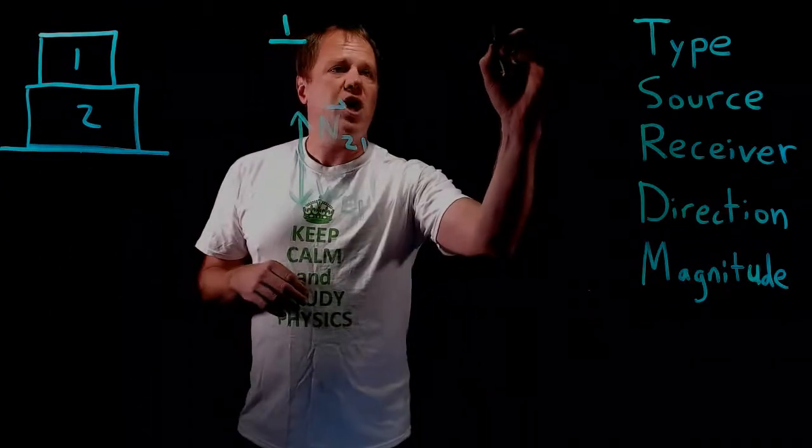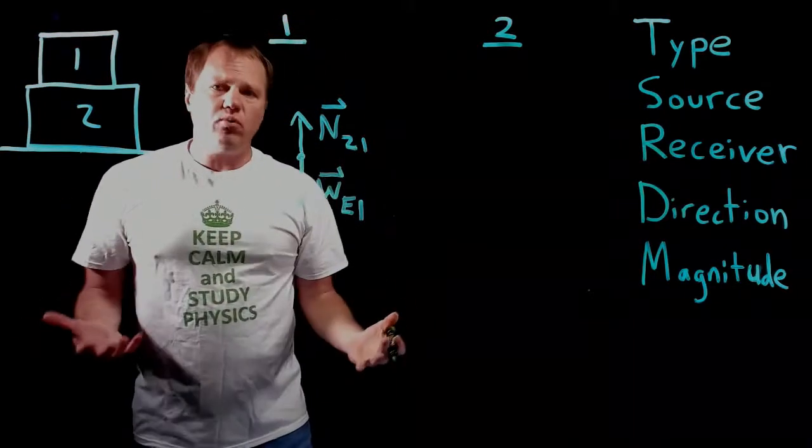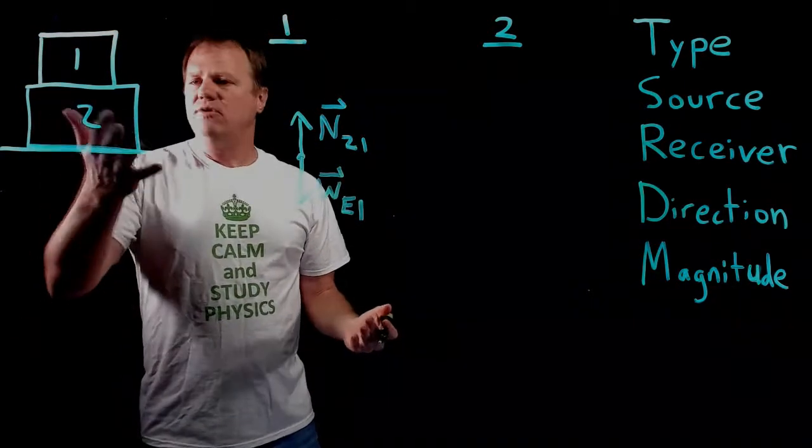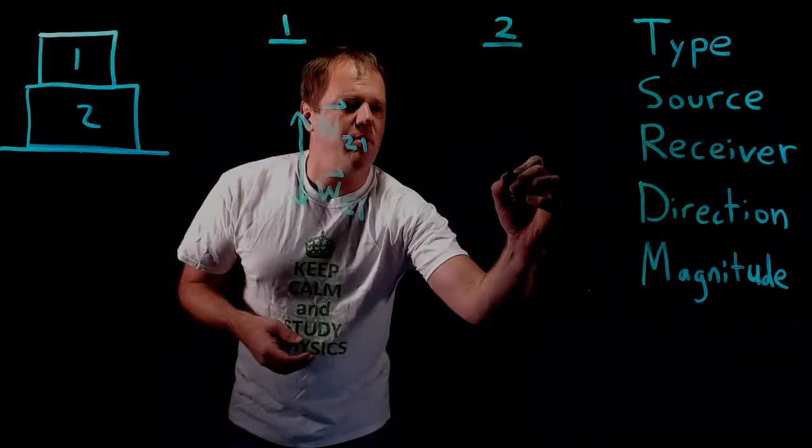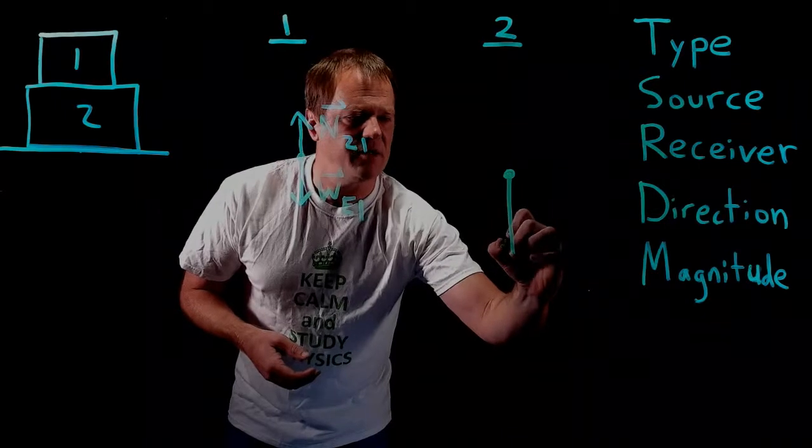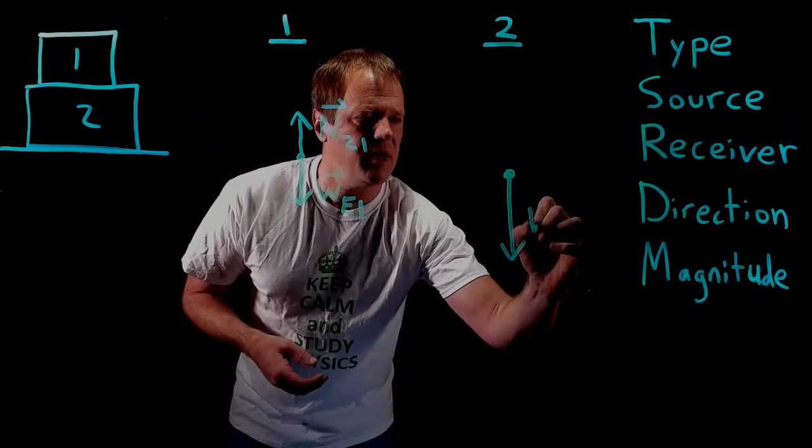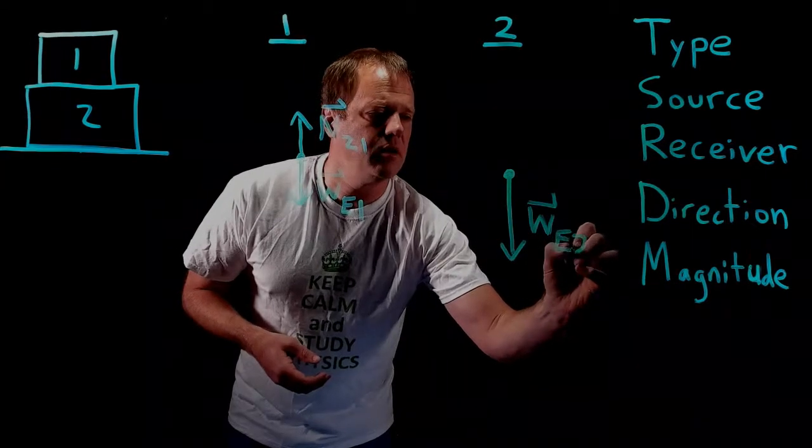Block two is a little bit more complicated. Block two, again, we can start with the weight force. I drew block two a little bit bigger, so I'll just assume that it has a greater mass and therefore a greater weight force. I'm going to draw a relatively big force vector down—weight force exerted by the Earth on block two.